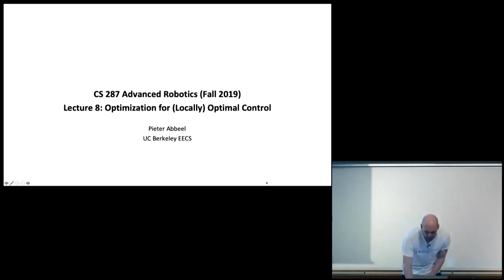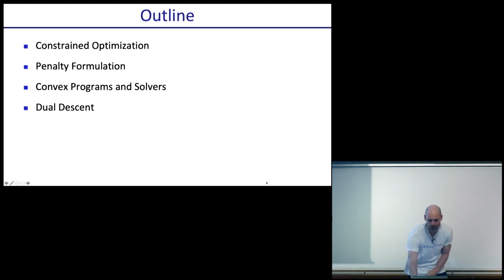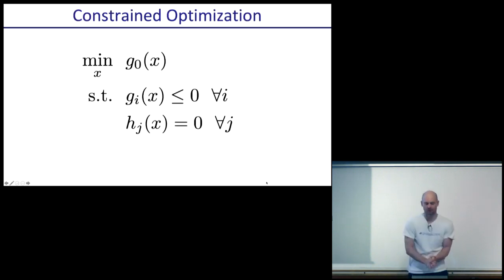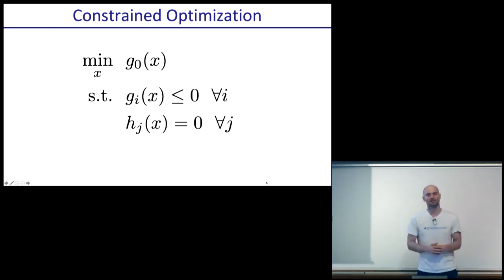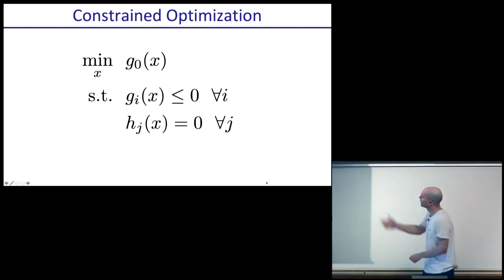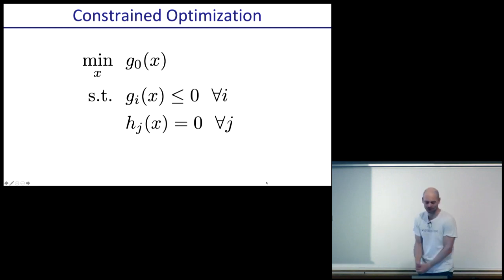Let's get started. I had a few things still to wrap up on constraint optimization — the first half of lecture will be on that. Constraint optimization looks at this type of problem: minimize some objective function, subject to some functions being smaller than zero, which defines a region in the space where you're allowed to be, and subject to some other functions equal to zero.